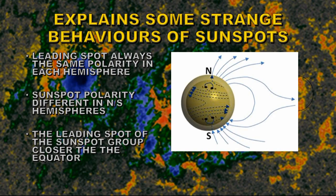This also explains why in most cases the leading spot in a major sunspot group is closer to the equator than the trailing spot, because again of this wrapping that leaves the field lines tilted towards the equator.